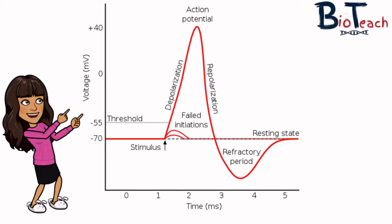In both A Level Biology and BTEC Applied Science, you need to be able to recognise the action potential graph and describe and explain what's happening at each stage in terms of ion movement and potential difference. On a typical graph, the potential difference at resting is minus 70 millivolts. When a stimulus is present, it has to reach and exceed the threshold level — the minimum stimulation the neuron needs to generate an action potential. If the threshold is not reached, there will be no response, as shown by the failed initiations on the graph.